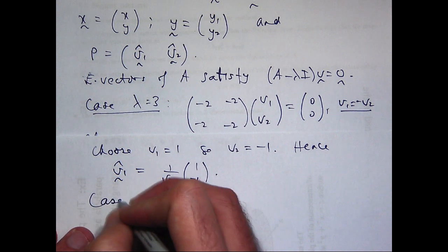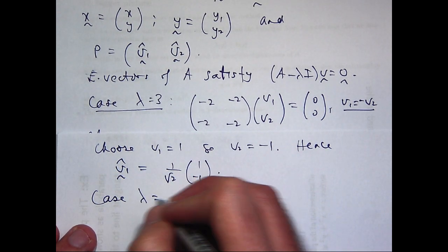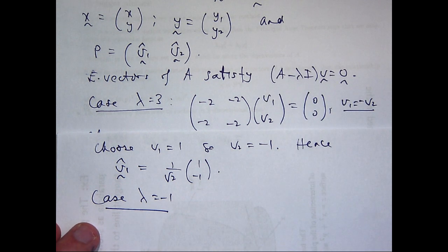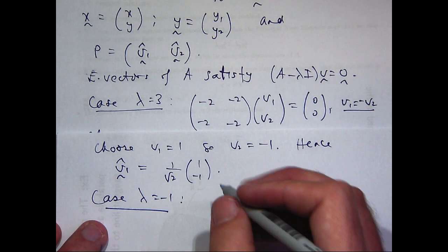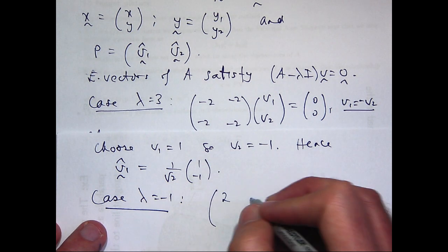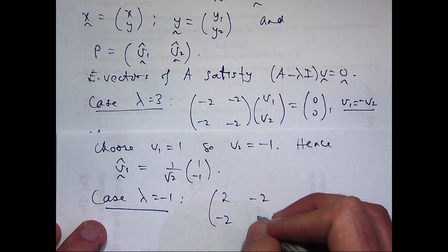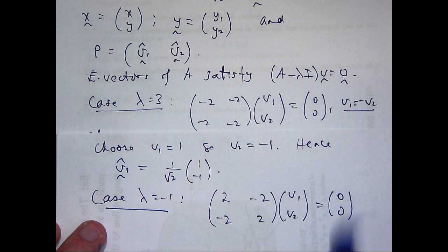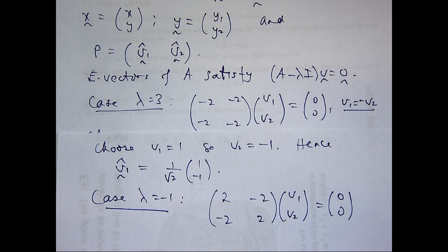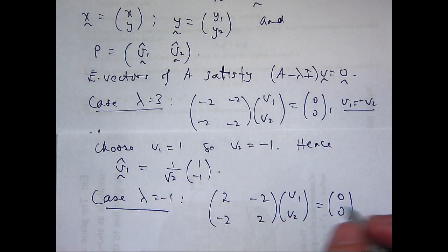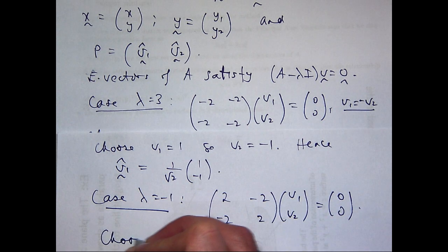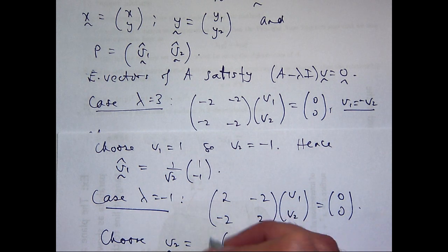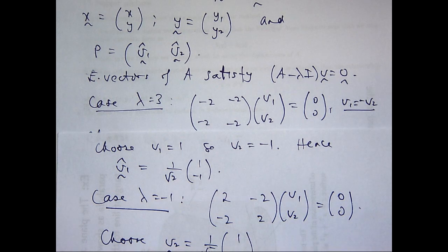The case when lambda equals minus 1, let's see if we can solve this again for v. Our system is going to look something like this. In this case, v1 and v2 are going to be equal. So I can choose 1 and 1 and divide by the length.